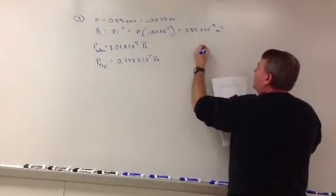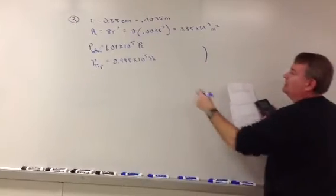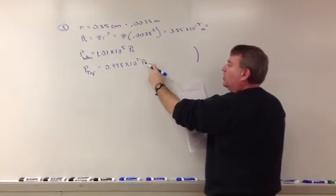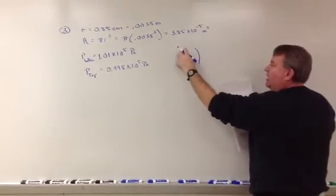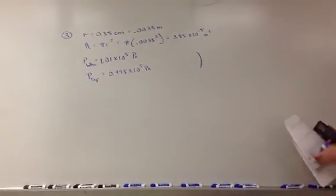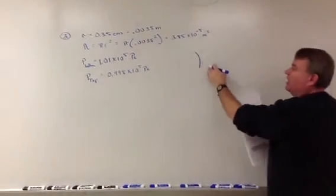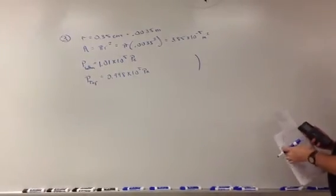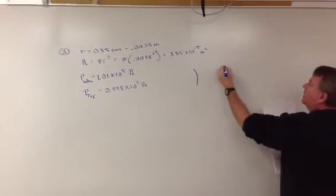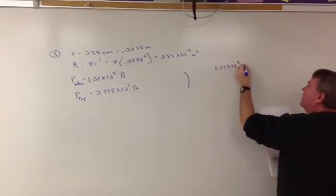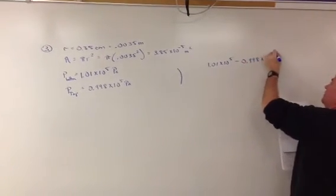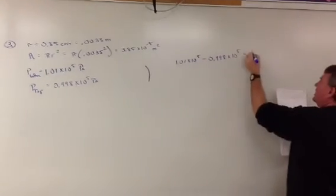And the inner ear has equalized at the higher pressure, but now it's been moved to a lower pressure area. And the body, the internal pressure of the human body is 1.01 times 10 to the 5th pascals, but the outside pressure has changed to 0.998. So the actual pressure on the ear is the difference between the two pressures: 1.01 times 10 to the 5th minus 0.998 times 10 to the 5th. And that gives us 1,200 pascals.